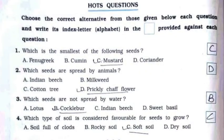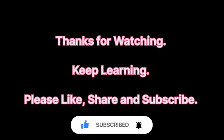Now we'll continue with the additional MCQs. First: which is the smallest of the following seeds? It's option C, mustard. Second: which seeds are spread by animals? It's option D, prickly shaft flower. Third: which seeds are not spread by water? It's option B, cocklebur. Fourth: which type of soil is considered favorable for seeds to grow? It's option C, soft soil.